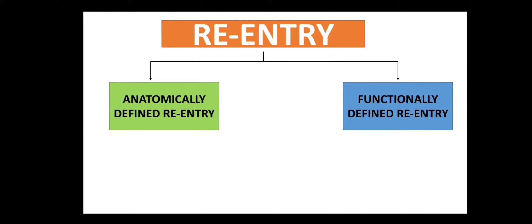We'll start our discussion with anatomically defined re-entry, and the classical example is Wolff-Parkinson-White syndrome. We know that the AV node is the bridge between atria and ventricle — it connects them. But in Wolff-Parkinson-White syndrome, there is an extra connectivity between the atria and the ventricle, known as the bundle of Kent.